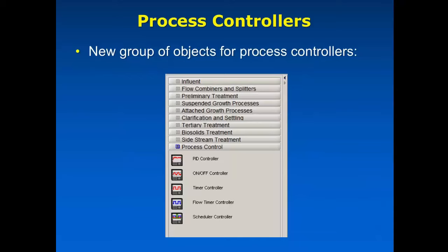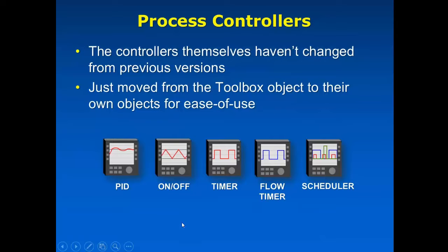I will mention also that we have changed up the way that we use our controllers in GPS-X. Previously, things like the on-off controller and the timer controller and so on were found in the toolbox object. So starting with this release in version 6.5, we have moved the controllers out to their own objects and keep everything else in that toolbox object. So you'll find a new process control tab actually here in GPS-X. Now you'll find these process controllers that you can drag and add to your screen. And all of the ones that you have been using in the past, like the PID, the on-off timer and scheduler and so on, these are all available for you to use.